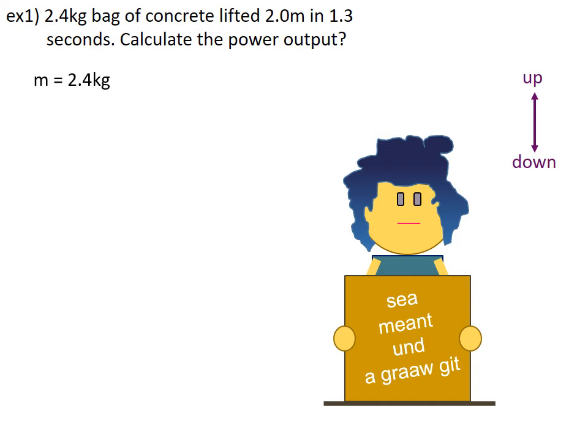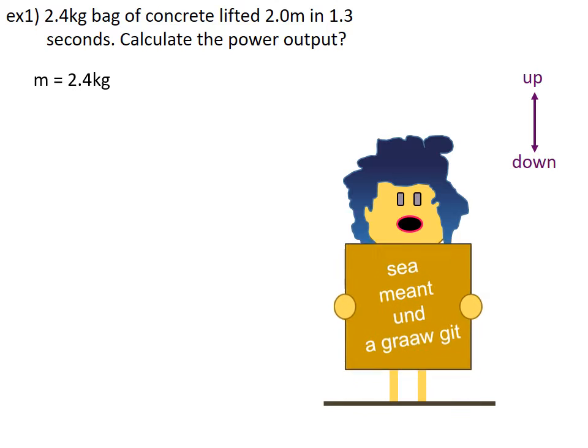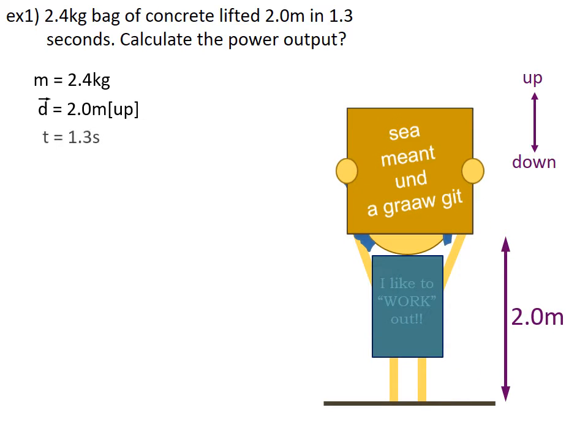Example 1, a 2.4 kilogram bag of concrete is lifted 2.0 meters in 1.3 seconds. Calculate the power output.